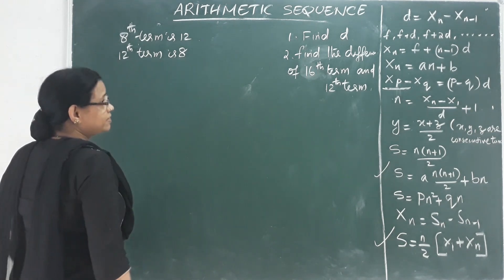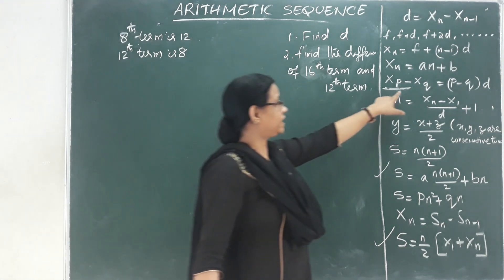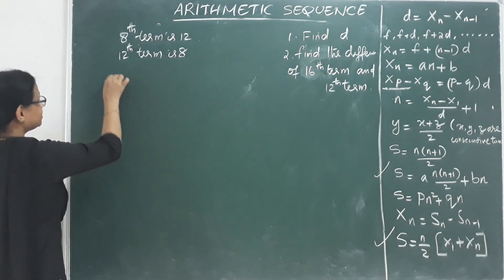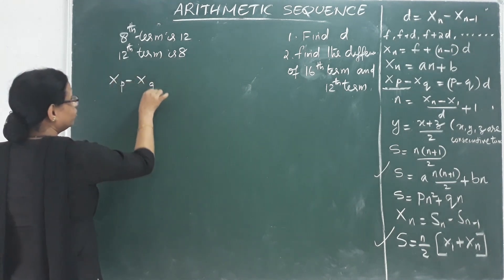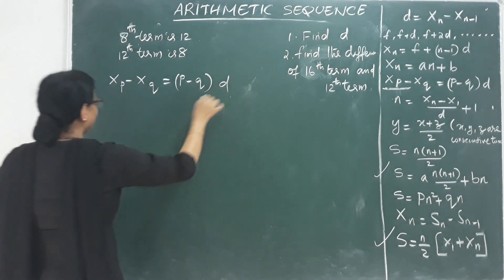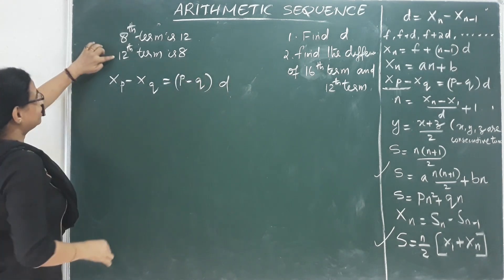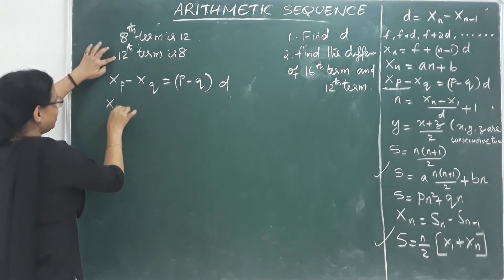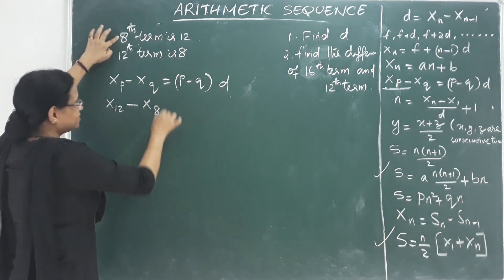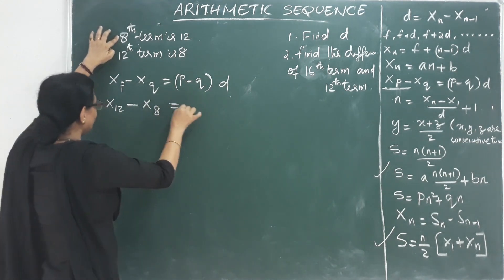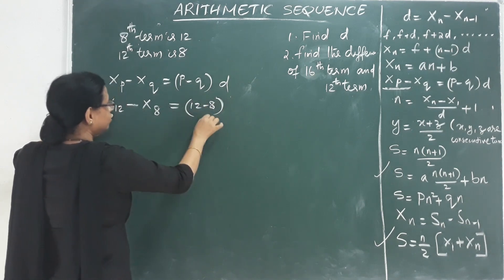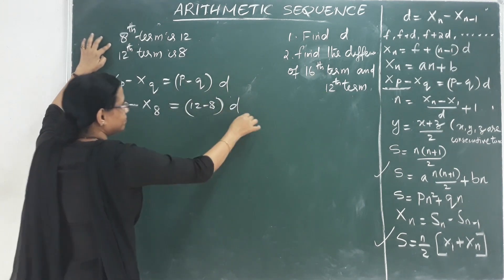We use the formula: xp minus xq equals (p minus q) into d. Applying this: x12 minus x8 equals (12 minus 8) into common difference d, which gives 4d.